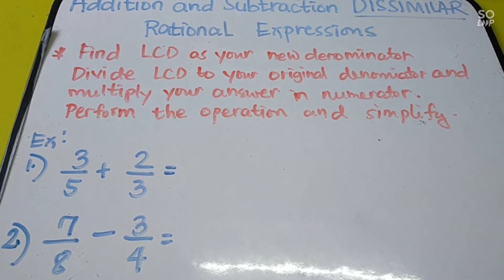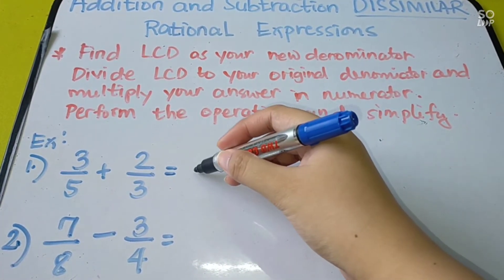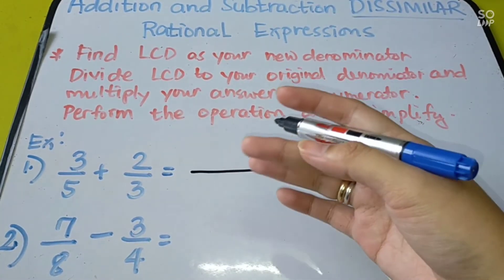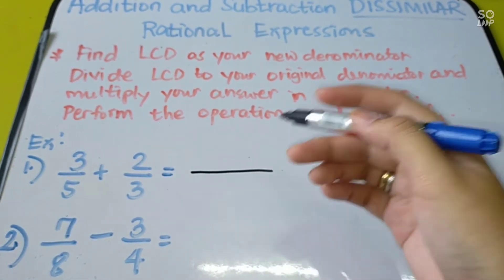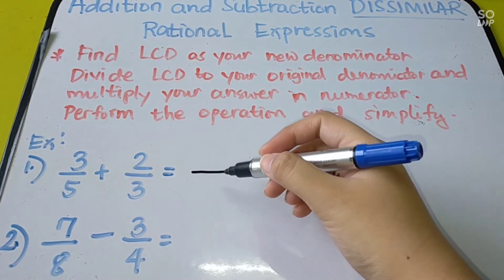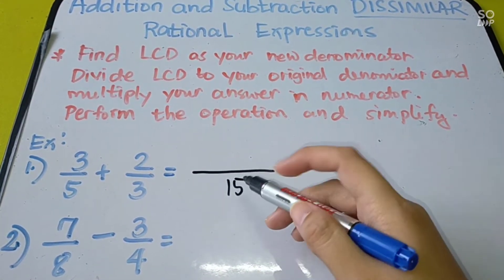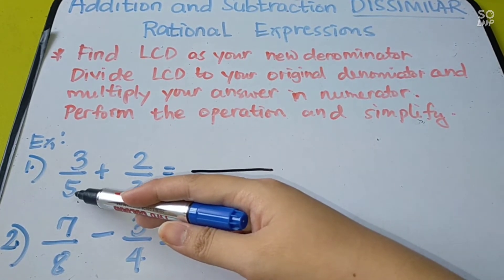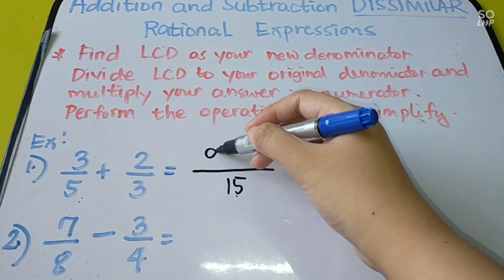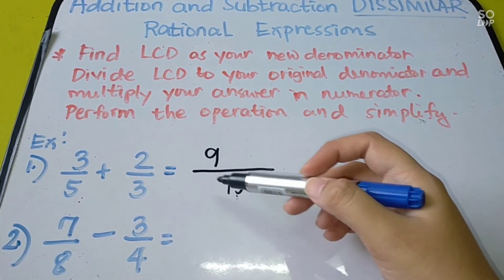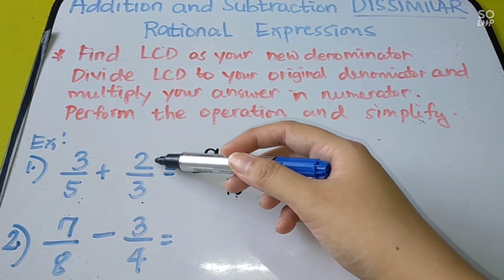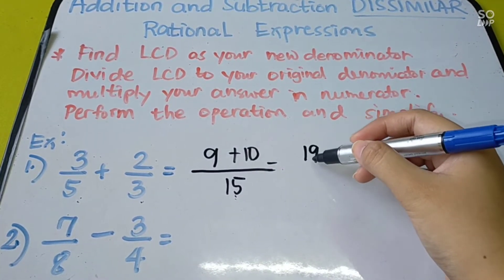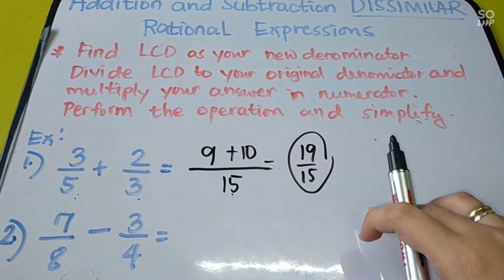Number 1: 3 over 5 plus 2 over 3. Find the LCD of 5 and 3 — since they have no common factor, multiply: 5 times 3 is 15. LCD is 15. Divide: 15 divided by 5 is 3; 3 times 3 is 9. Then 15 divided by 3 is 5; 5 times 2 is 10. So we have 9 plus 10 is 19 over 15.